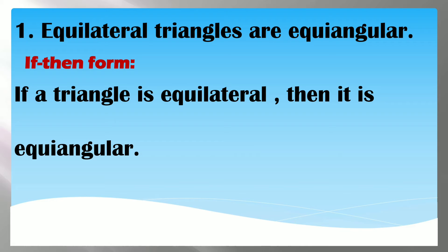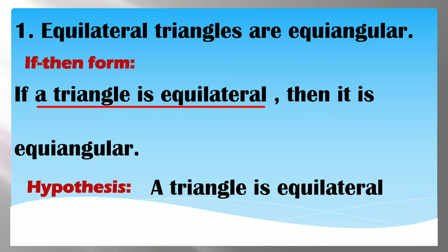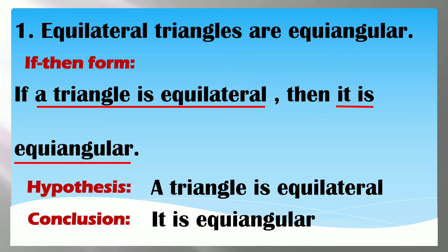Think about what equilateral triangles are — they are a kind of triangle. When we use the if-then form, we can add words to describe the statement so it sounds complete and makes sense. The hypothesis is 'a triangle is equilateral' — found in the if clause — and the conclusion is 'it is equiangular,' found in the then clause. Note that the words 'if' and 'then' are not part of the hypothesis or conclusion.